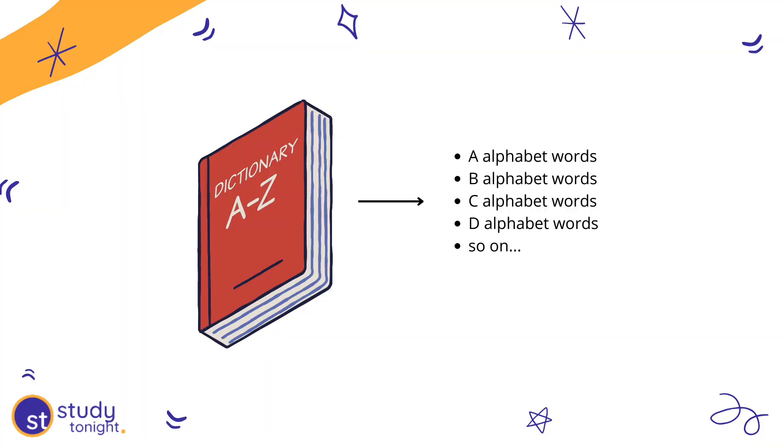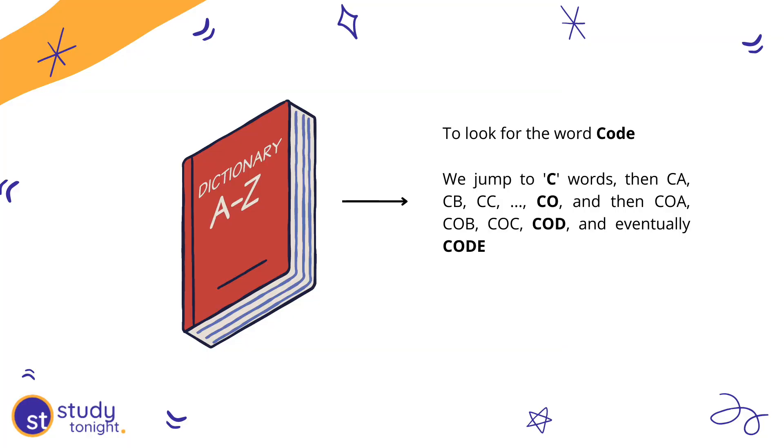Now let's take another example. If I give you a shuffled deck of cards and ask you to find one specific card, you'll check each card one by one until you find the right card. Whereas if I give you a dictionary and ask you to find a specific word, will you search it word by word? No, because in a dictionary, words are sorted in alphabetical order. You can easily find the word by jumping to the section where all words of that particular alphabet are listed, and quickly reach the required word because dictionary content is always sorted.